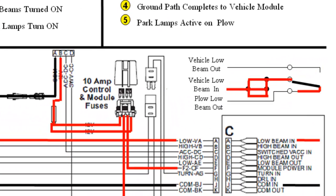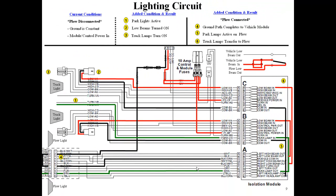The relays in the isolation module switch, which transfers the light signal from the truck to the plow lights, activating the low beams.